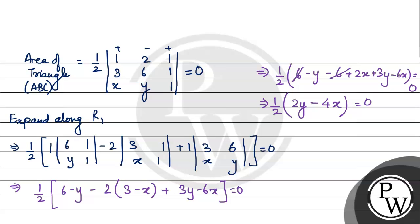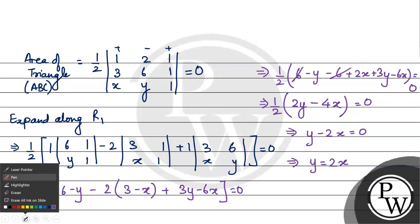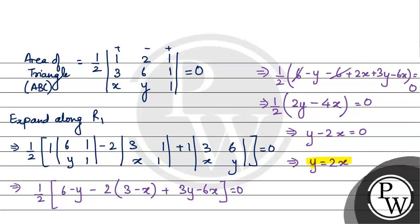Divide by 2, this implies y minus 2x equals 0, which further implies y equals 2x. So the final answer is y equals 2x. I hope you understood it well. Best of luck.